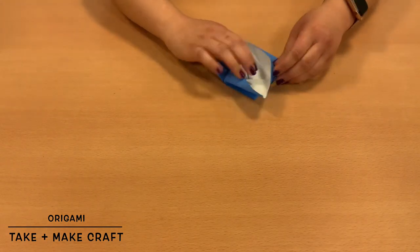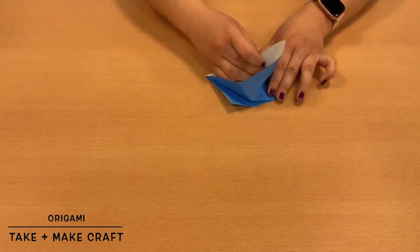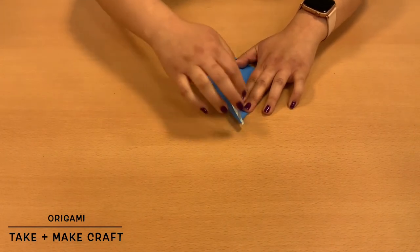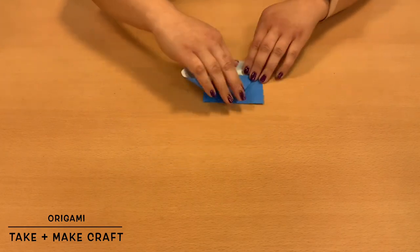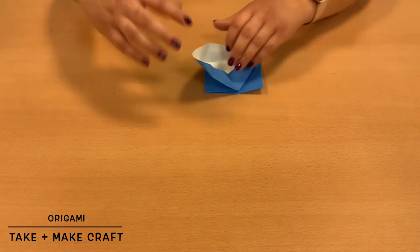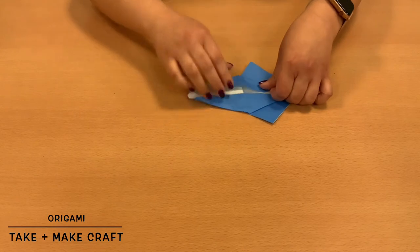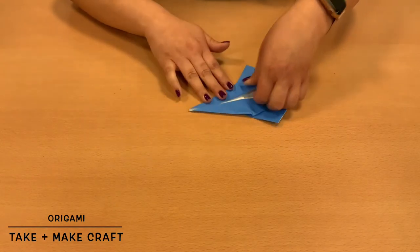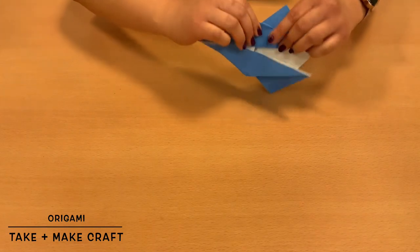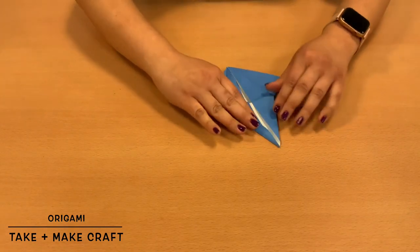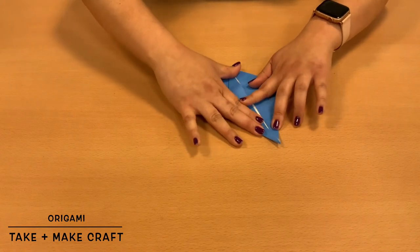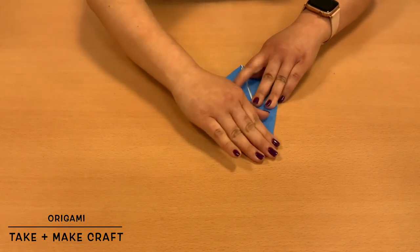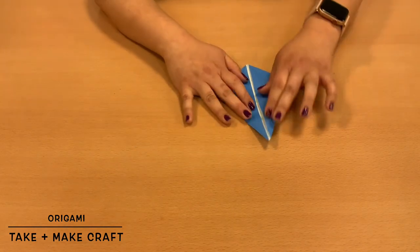And then, you will create basically a longer diamond shape. Like so. Sometimes it might not cooperate, but it's okay. Take your time. Okay. And now, you'll go ahead and repeat it on the other side.